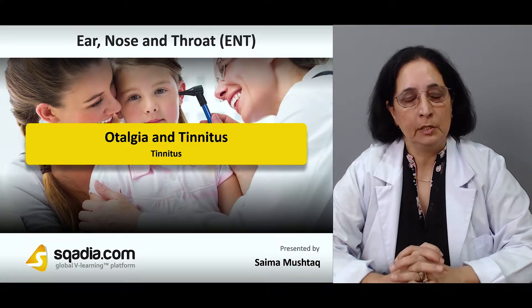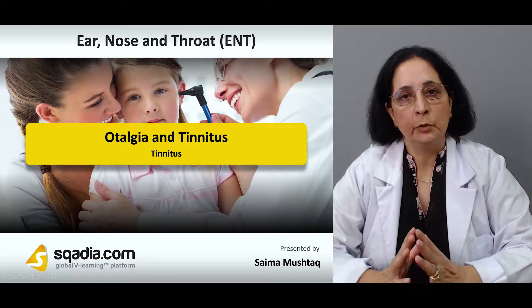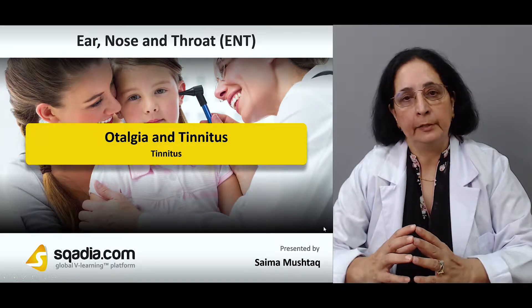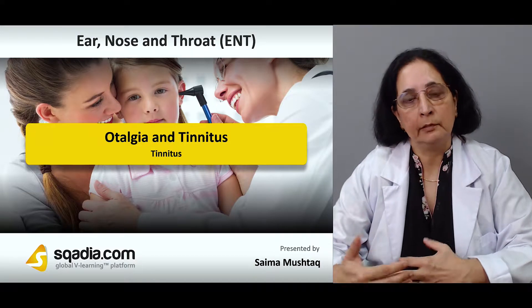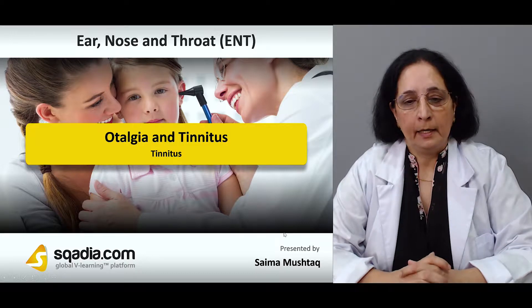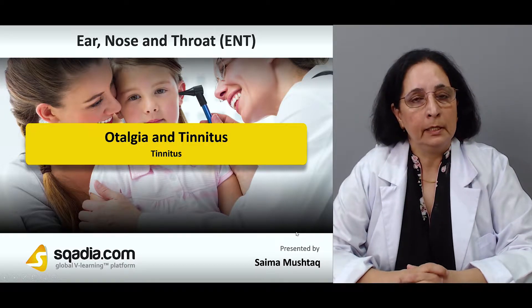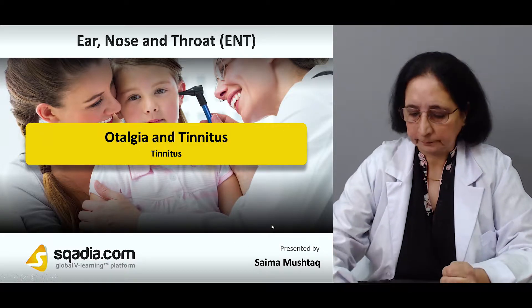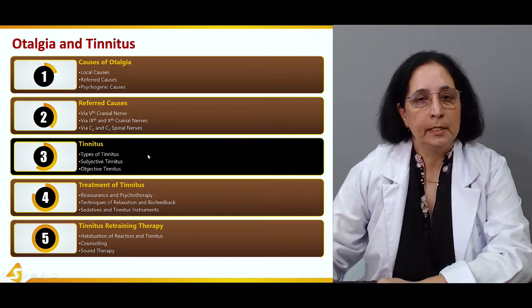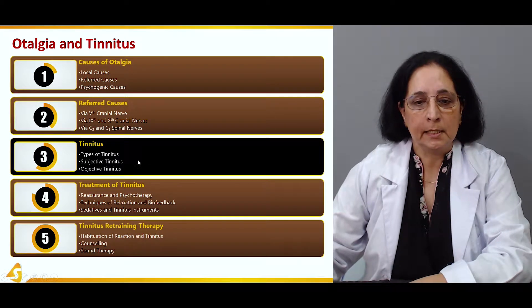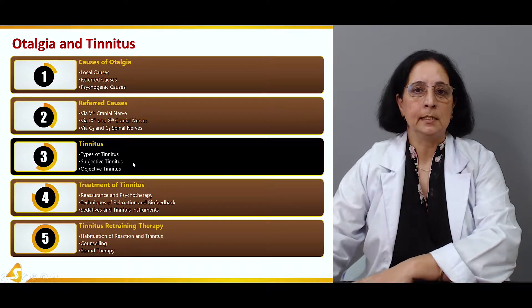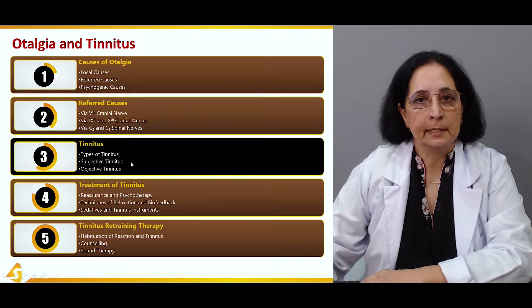In the first two sections we talked about otalgia, covering local causes, referred causes, and psychogenic otalgia. Now let's start discussing tinnitus. In this section we will talk mainly about the different types of tinnitus — subjective tinnitus and objective tinnitus — in detail.